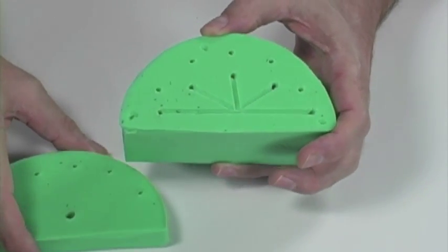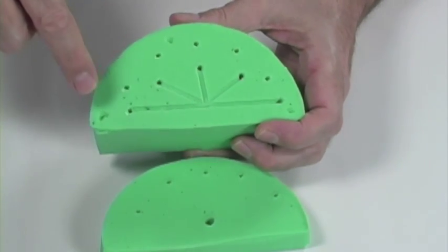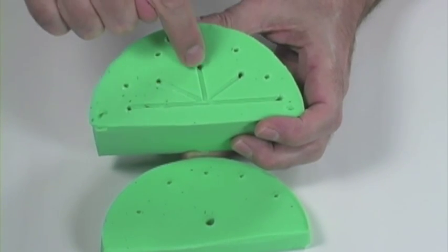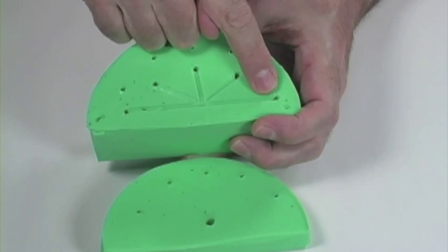Now this layer here shows where the air comes out of the mold. And these are the points where the plastic gets injected into each cavity.